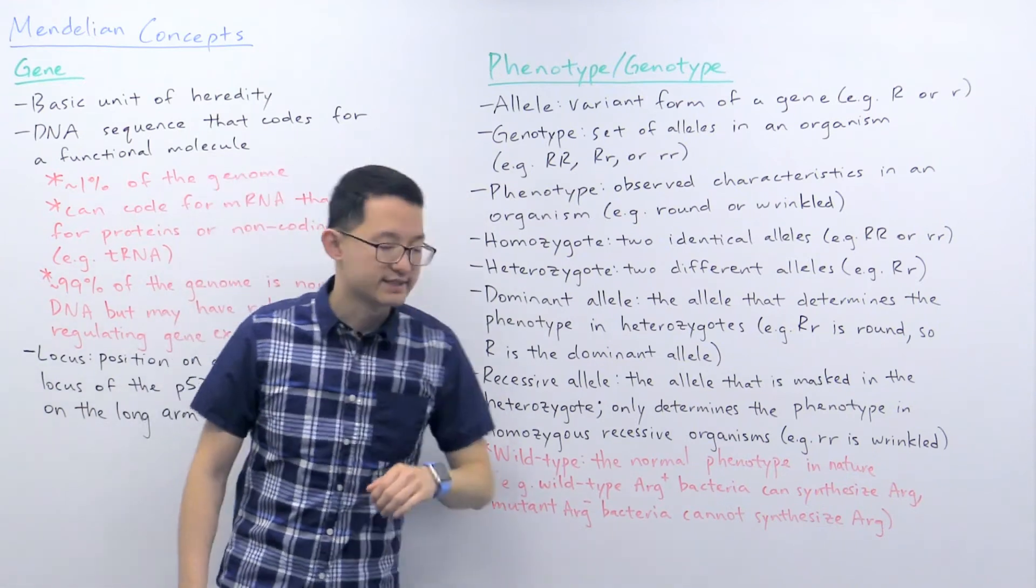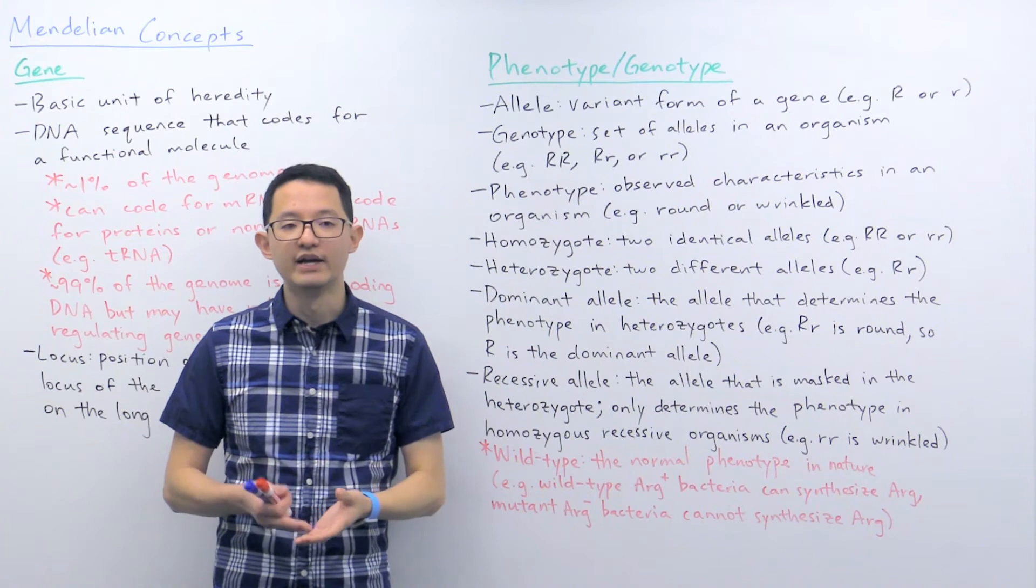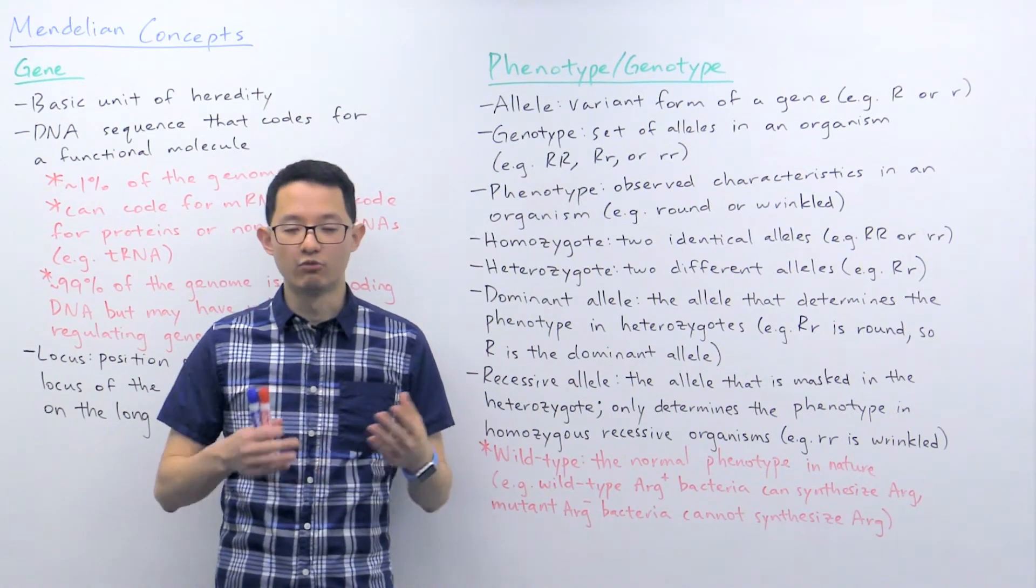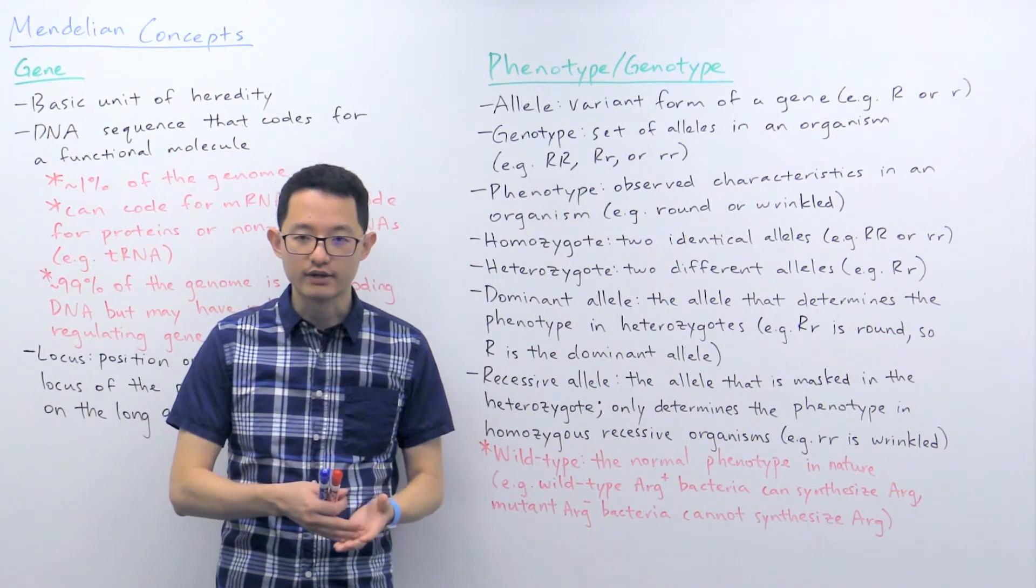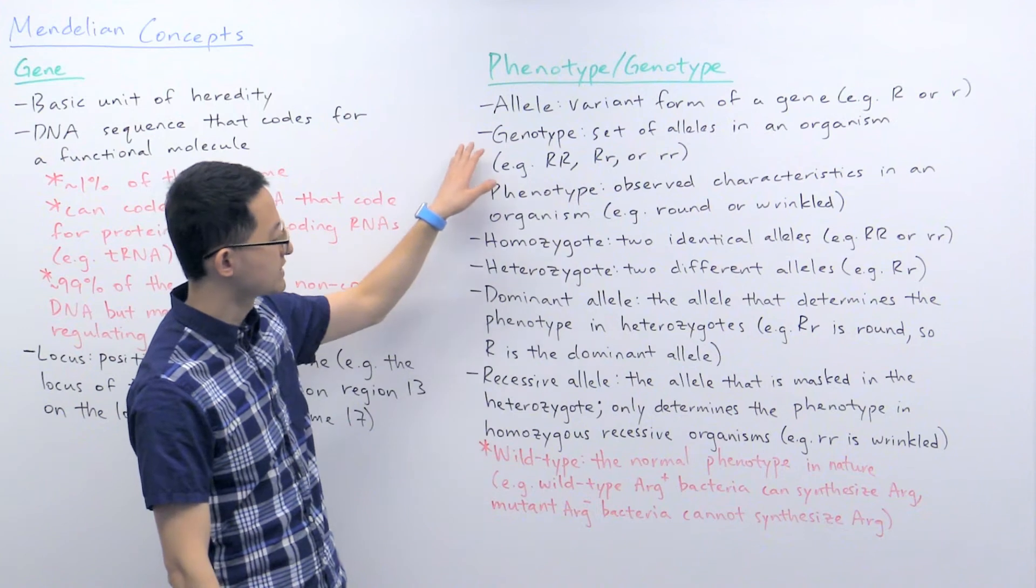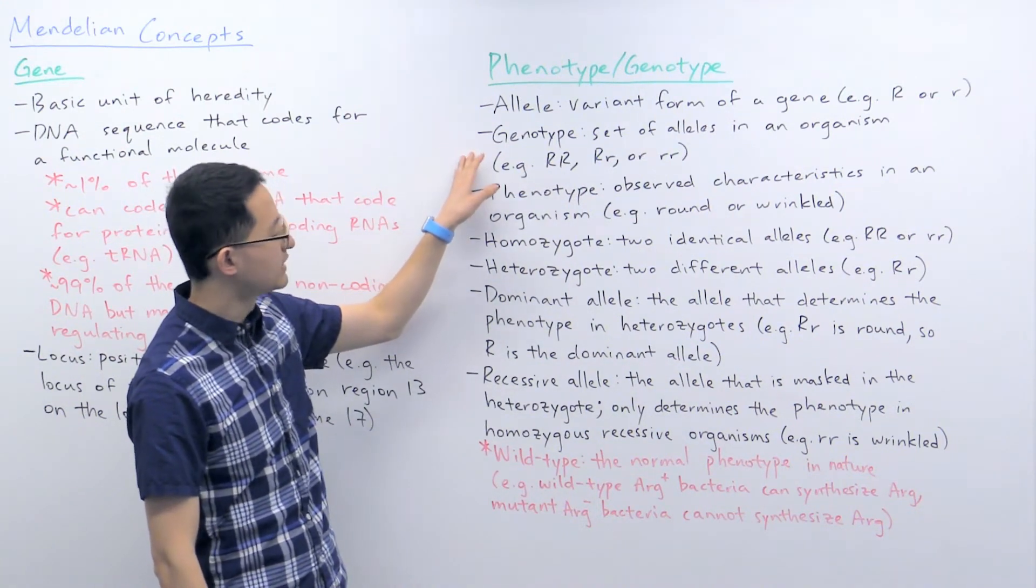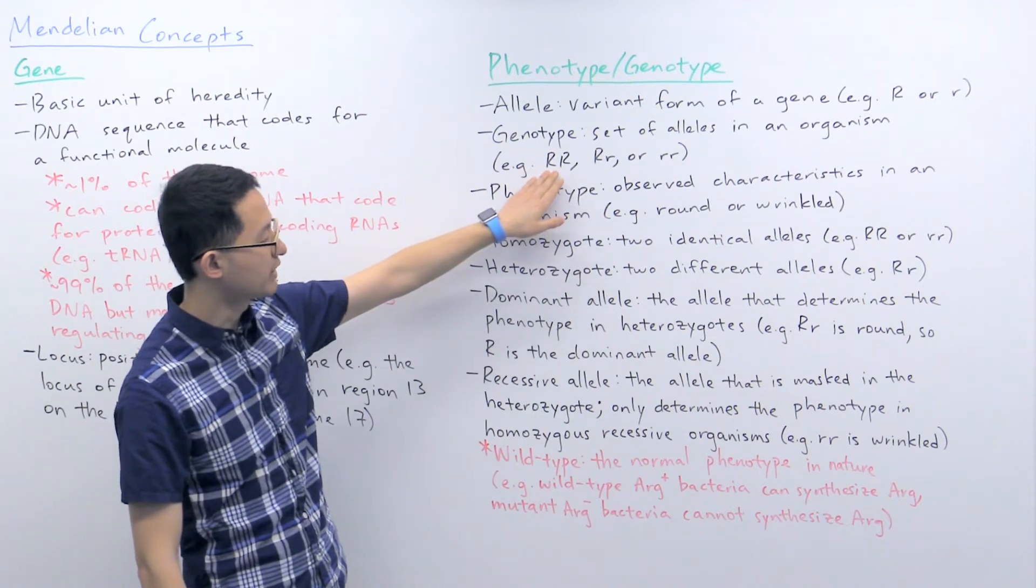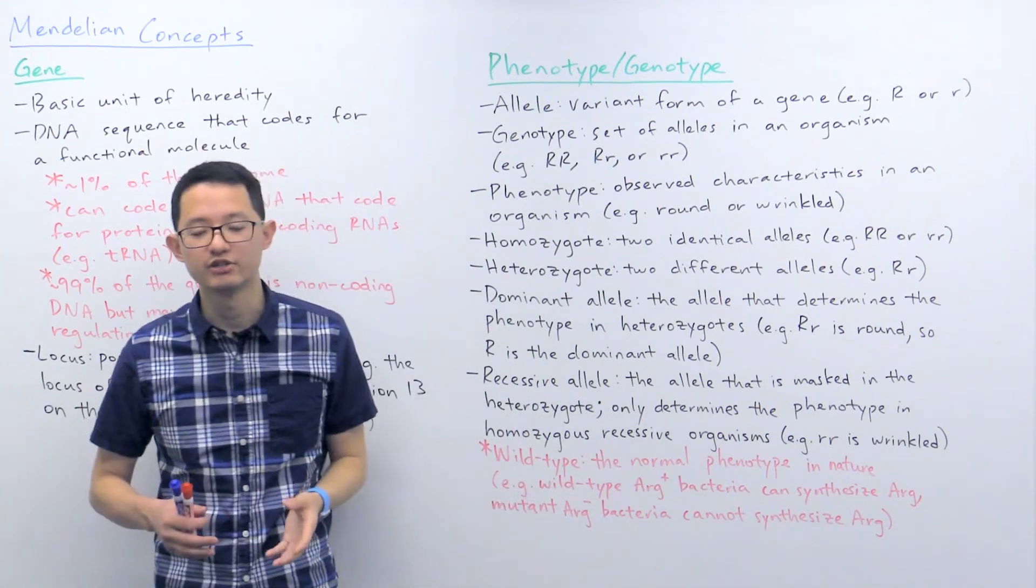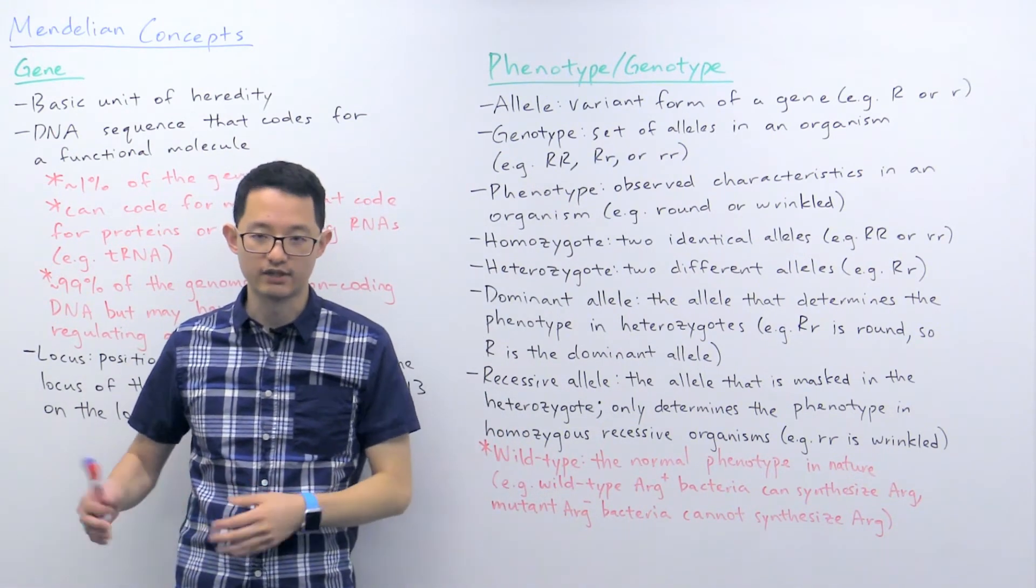Genotype refers to the set of alleles in an organism. So we know for organisms, they will have two copies of each gene. And one copy they will inherit from the mother and one copy they will inherit from the father. So when you're looking at the set of alleles in this example of the pea shape, then you could be either big R big R, big R little r, or little r little r. So essentially genotype is referring to the set of alleles for a particular gene in an organism.